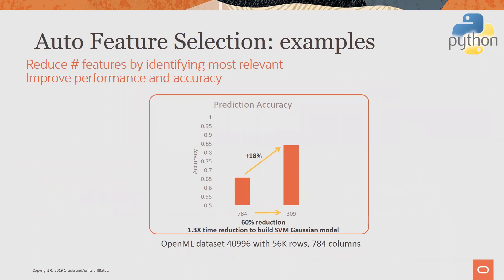For a feature selection example: Oracle Labs evaluated a wide range of datasets. On one dataset with 56,000 rows and nearly 800 columns, feature selection achieved a 60% reduction in the number of features, an 18% increase in accuracy by eliminating noise, and was 1.3 times faster using an SVM Gaussian model. This demonstrates the significant potential benefits of feature selection.